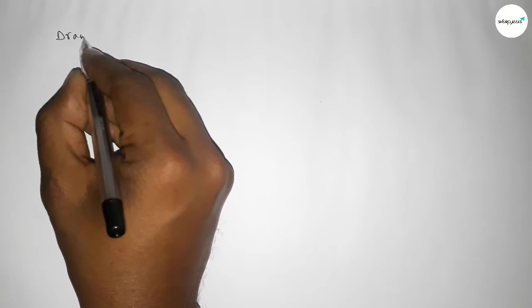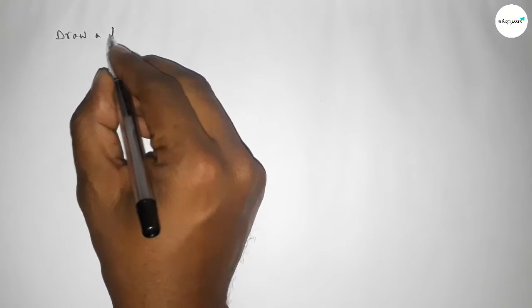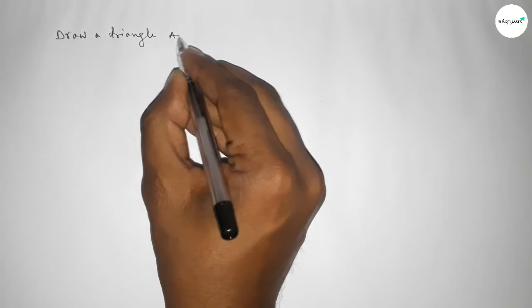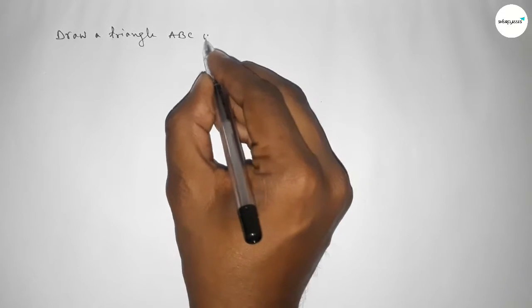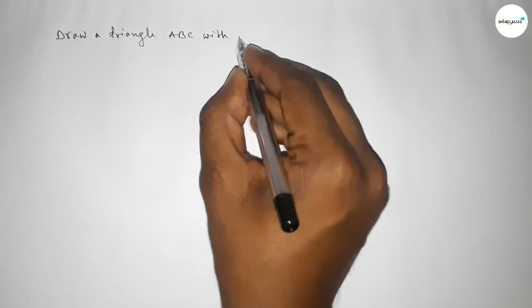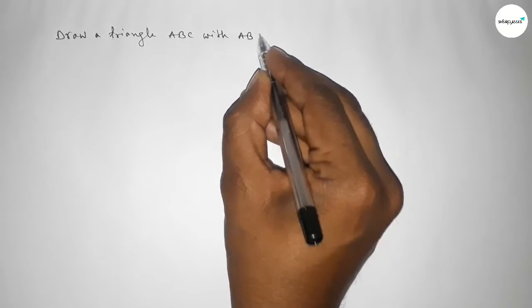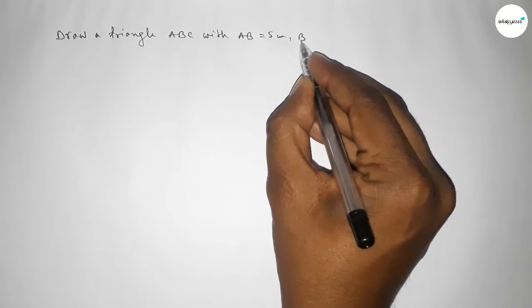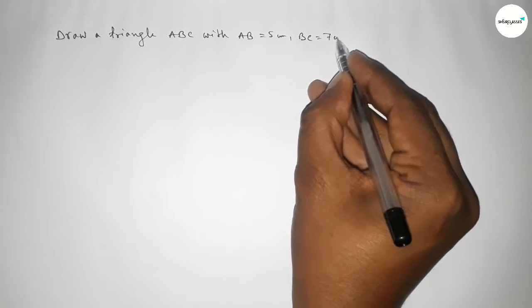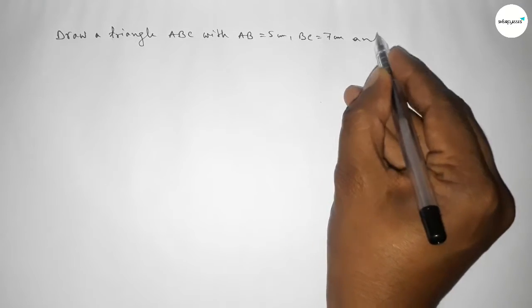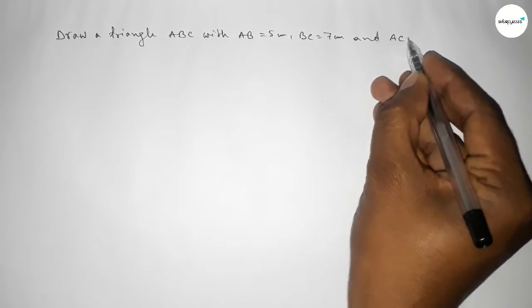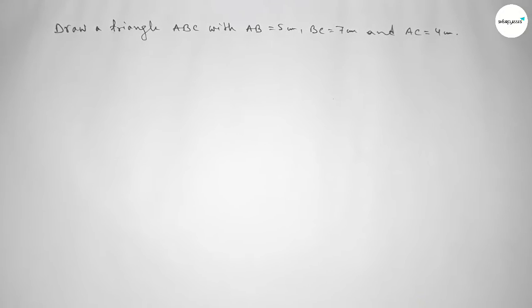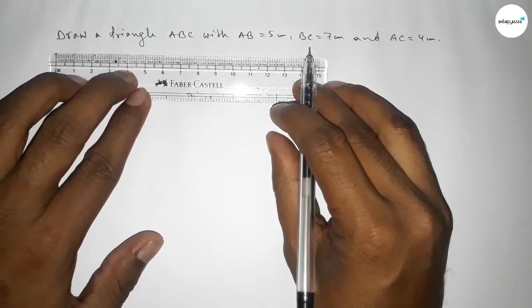Hi everyone, welcome to SI Share Classes. Today in this video we have to draw a triangle ABC with AB equal to 5 centimeter, BC equal to 7 centimeter, and AC equal to 4 centimeter. So let's start the video.